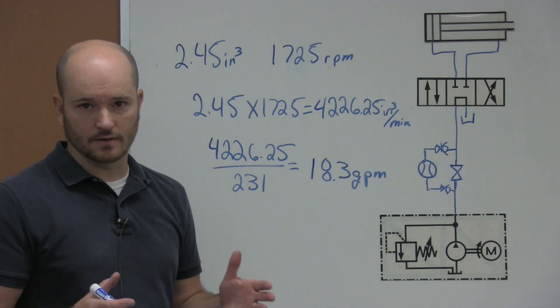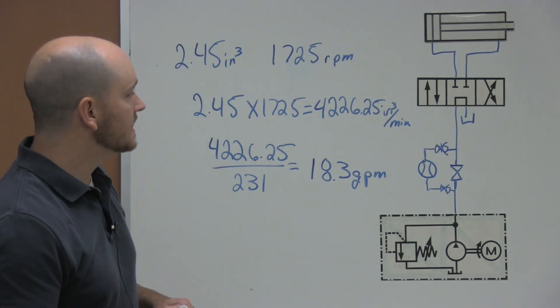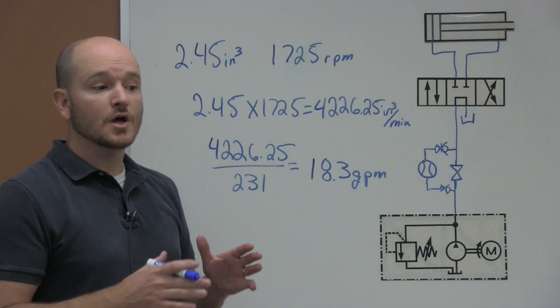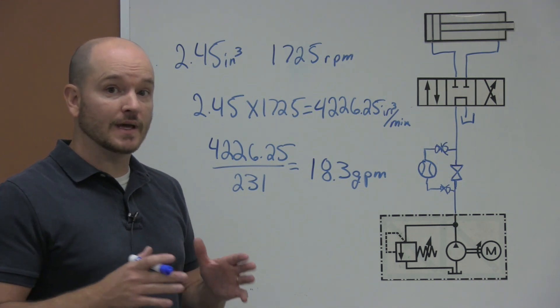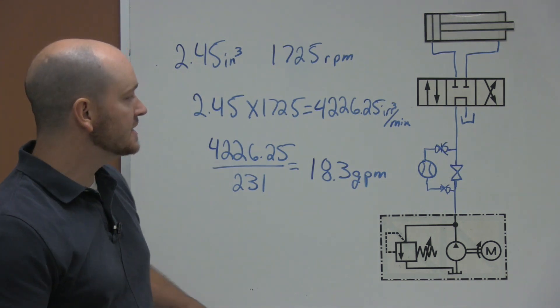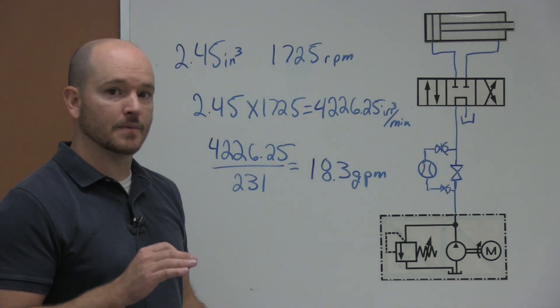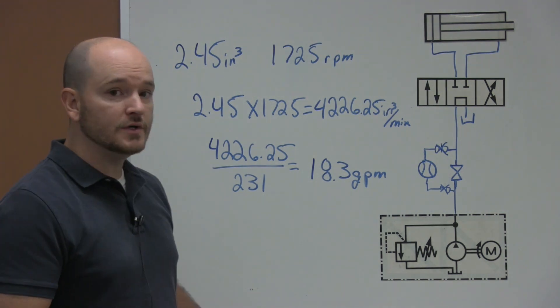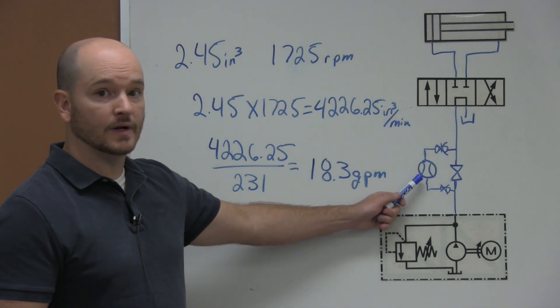Now I keep saying theoretical. Why? Because out in the real world, nothing is ever going to be 100% efficient. So what we might be doing out in the field is going through every once in a while and actually seeing what the real gallons per minute of the pump is. So we would come here and put in a flow meter.